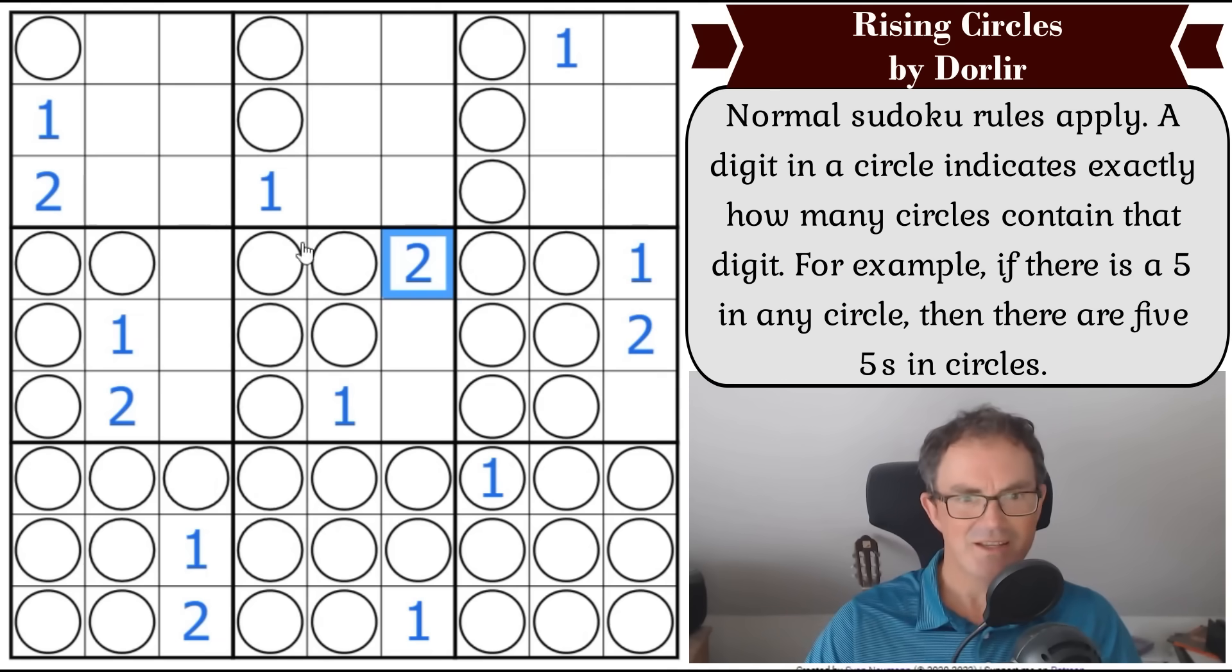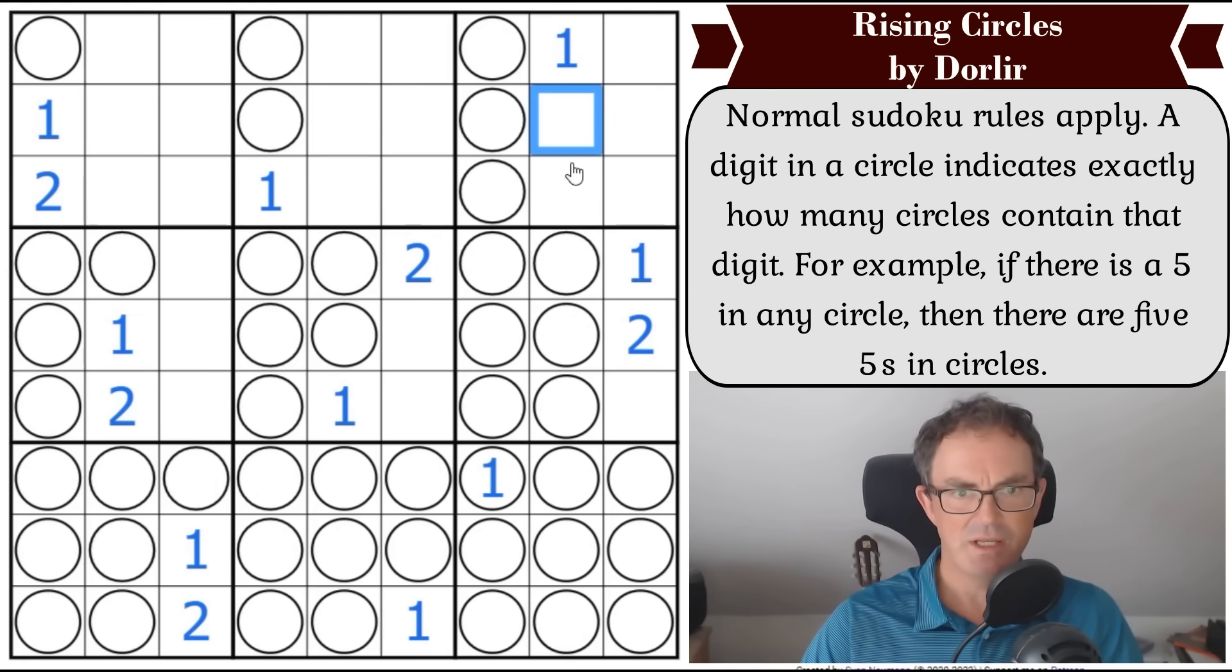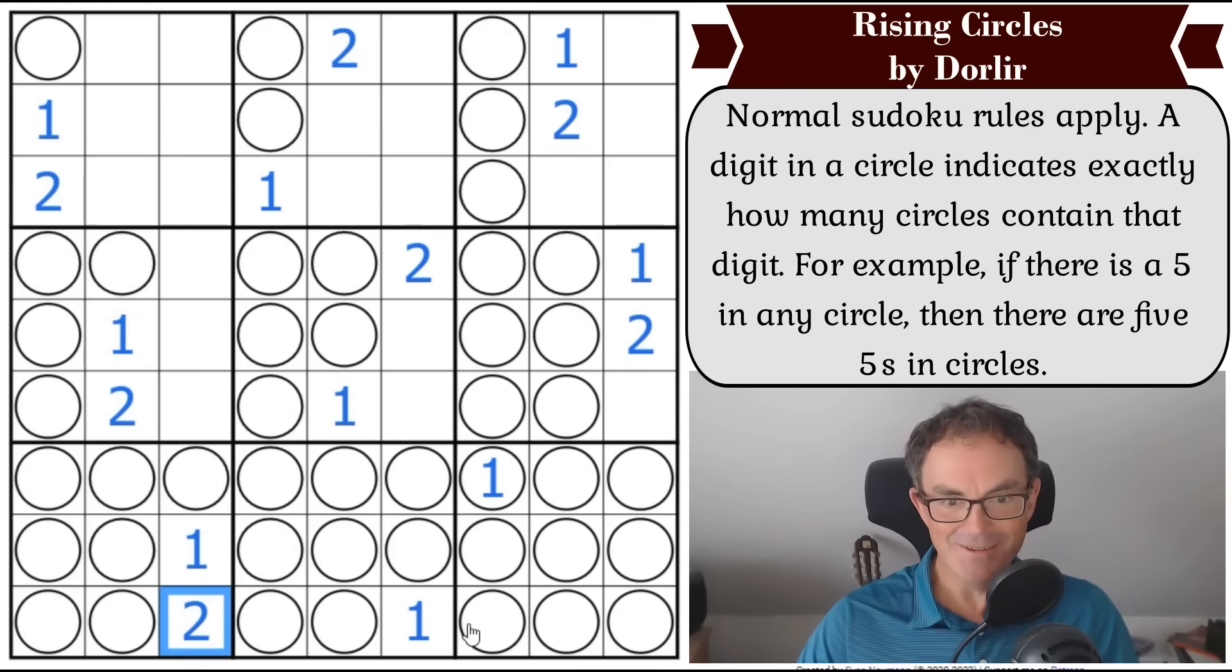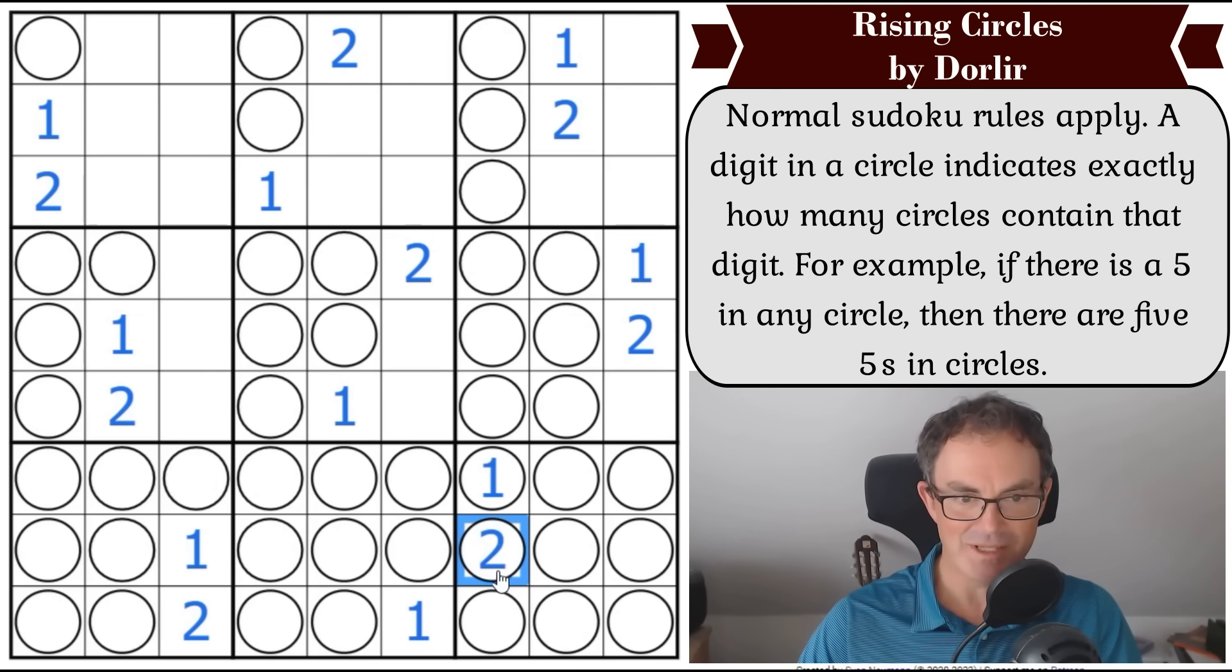Oh, it does. Somehow Dorlier's put the geography of these circles in places where, even though I can't type two, I can fill in twos. Although now I can get the two in this box as well, because that two is stopping it going there. So that's got to be two. And now there must be four twos looking at box eight. So that's a two. And now I'm going to turn my attention. You've guessed.